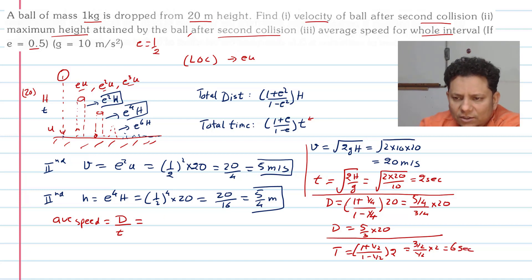So average speed is (5/3)×20 divided by 6 seconds, which equals 50/9 meter per second. So you have all three answers.